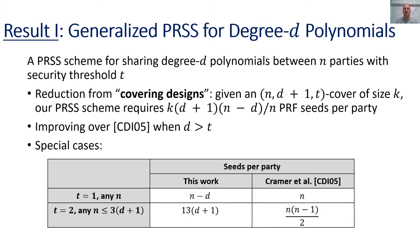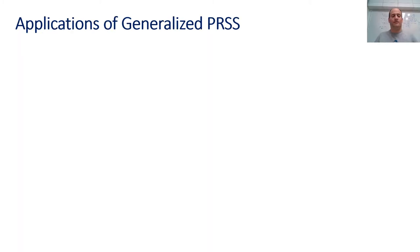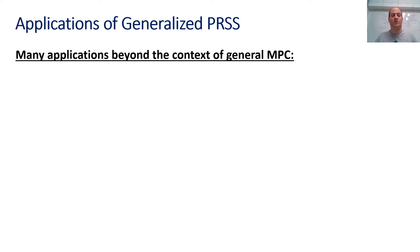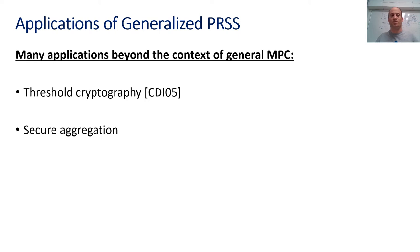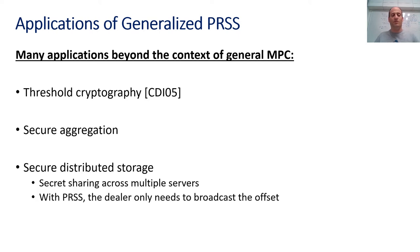In the following table, we can see the number of seeds per party in this work and in the work of Cramer et al. for two special cases: when T equals 1 for any number of parties, and when T equals 2 for any number of parties such that N is smaller than 3D plus 1. This result has many applications beyond MPC — for example, threshold cryptography, secure aggregation for federated learning, and secure distributed storage, where with PRSS the dealer only needs to broadcast the offset between the actual secret and the PRSS-generated secret.